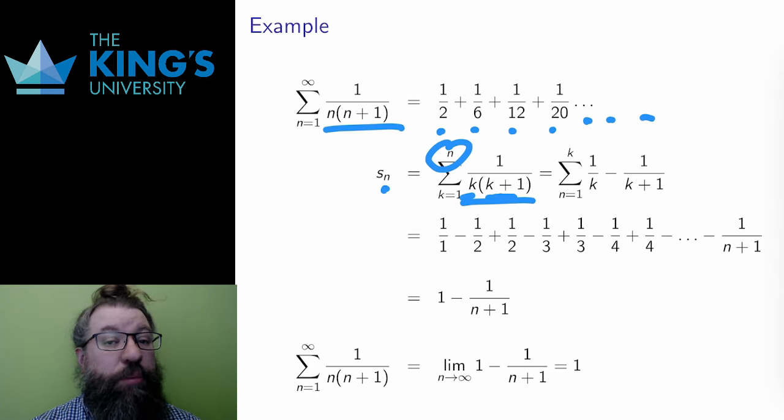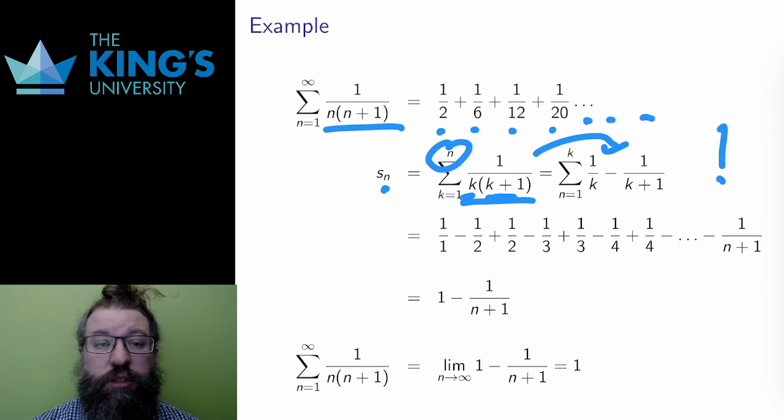1 over k times k plus 1 is a rational function with two linear factors in the denominator. Well, this means that partial fractions applies from a few weeks ago when we did integration of rational functions, and I told you this technique would return. This is a good example. In this case, the partial fraction process breaks up 1 over k times k plus 1 into 1 over k minus 1 over k plus 1. Knowing this, let me look at the partial sums.